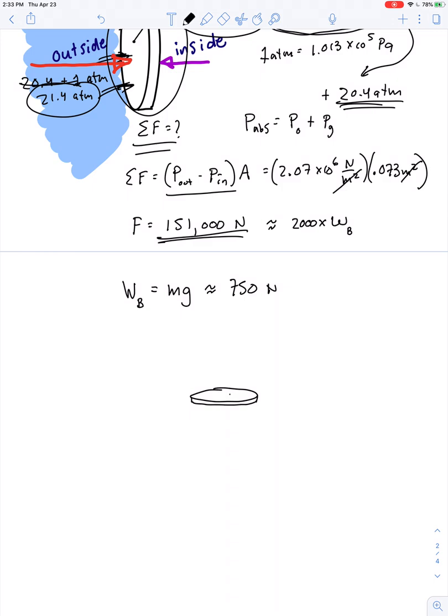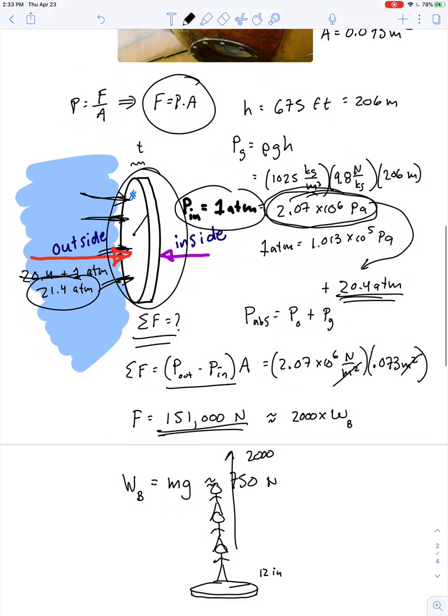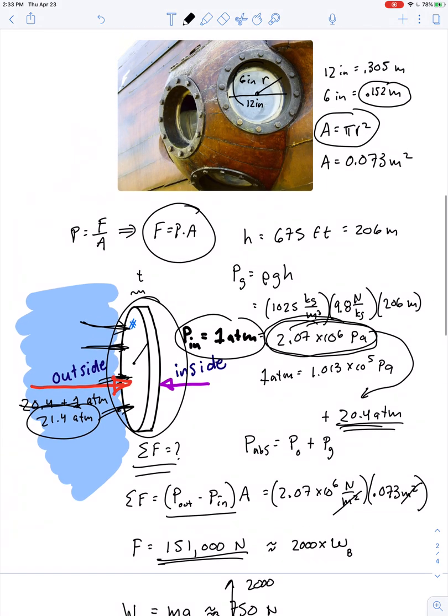Take one of these 12-inch windows and start stacking a bunch of people on it. Figure not drawn to scale. You get what we're saying here? You could stack 2,000 people on it, and that would create the same amount of force as you would get due to diving at a depth of 675 feet.